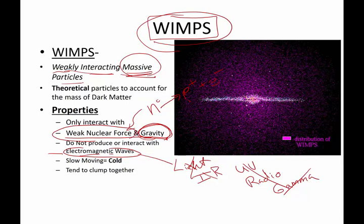Whatever these WIMPs are, they're cold. And cold in science means slow — they're not moving very fast. They're not zippity-doo-dying through the cosmos. But they do have a tendency to clump, and things that have a tendency to clump together, that basically means gravity.